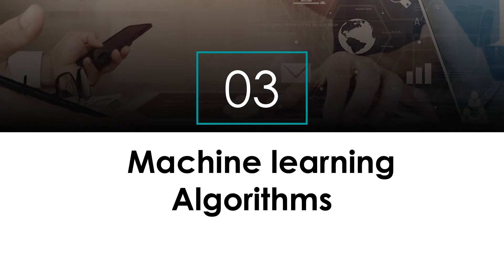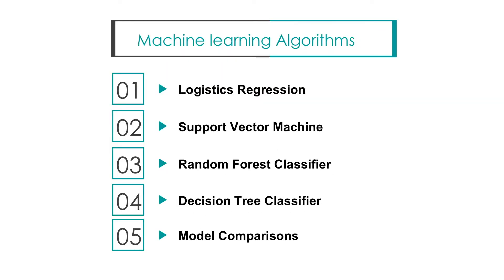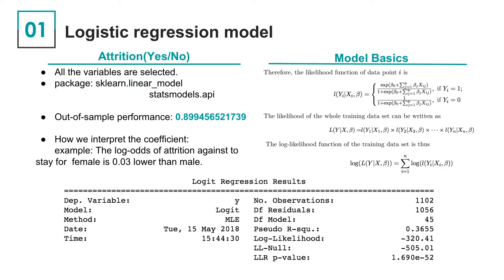In the following sections, we will present a few classification algorithms. Here is the outline for the models we are using: logistic regression, support vector machine, random forest, and decision tree. We will then compare these four algorithms regarding their out-of-sample testing accuracy and runtime complexity. Before training the models, we split our data into training and testing sets and factorize some factor variables.